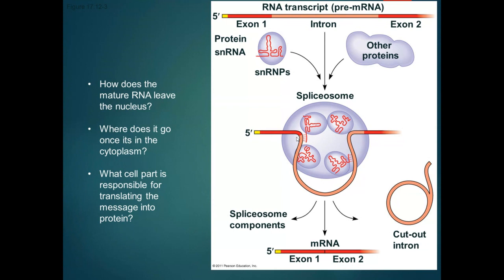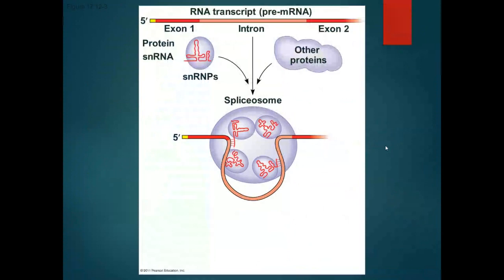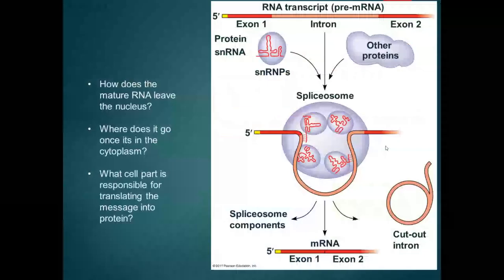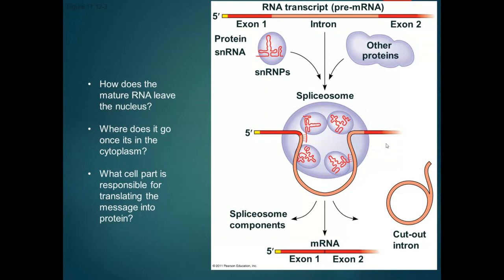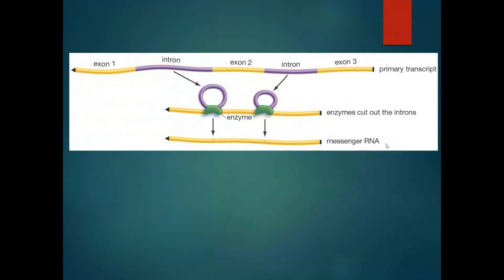Once processing is complete, that RNA is going to leave the nucleus and go find a ribosome, because the ribosome is responsible for the translation part. Here's another picture: the original mRNA transcript has exon, intron, exon, intron, exon. The spliceosome comes in, loops out the intron, cuts it, and puts the exons back together. The mature mRNA that's done being processed is shorter than the original RNA, which we call the pre-mRNA.